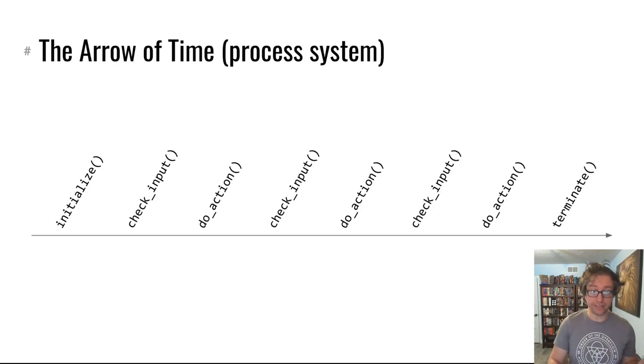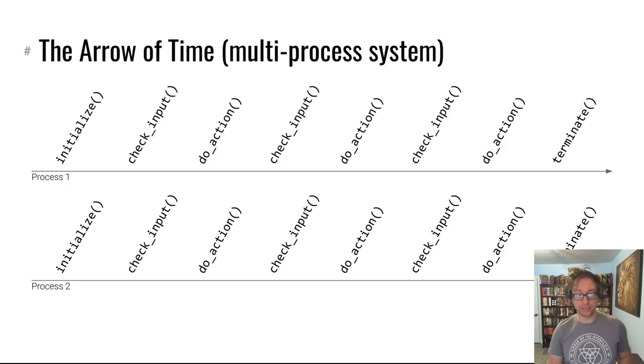A process has a similar experience. A process executes operations, performs operations in order. It'll initialize, then it might look at the input it's received, it might carry out some action on it, look at the next amount of input, carry out more actions and so forth. This all makes sense. Now what about two processes? Let's say you launch this program twice that initializes, checks input, does stuff, checks input, does stuff and so on. To each process, they're internally ordered, right? And this makes sense.